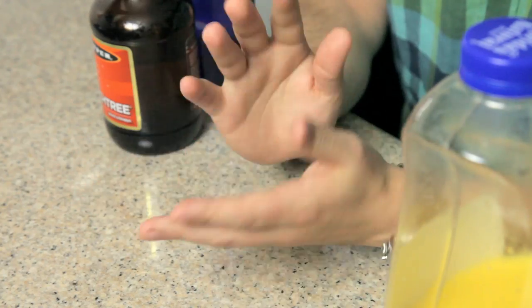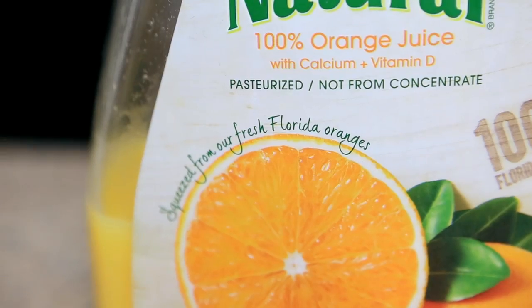A fuzzy navel is an outrageously simple drink consisting of peach schnapps, vodka, and orange juice. Let's make it.